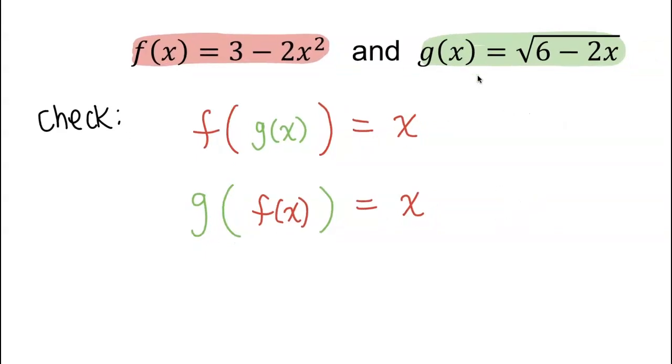As you can see, this is going to be a two-step process. Let's start with checking f of g of x. If that first condition comes out to be x when we simplify it, then we're going to move on to the second check.